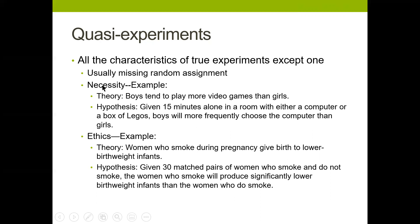Why do we do quasi-experiments? Sometimes it's necessary. If we're interested in differences between boys and girls — say, the theory that boys tend to play more video games than girls — we put boys and girls in a room with a computer or a box of Legos and see which is chosen. What would look like our independent variable would be boy or girl. But we can't randomly assign gender — we can't pull 30 children into a room and assign one to be a boy and another to the girl group.